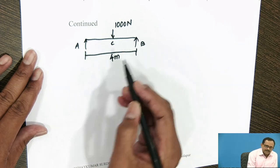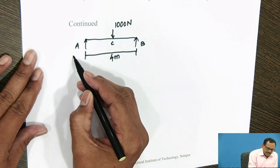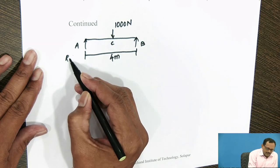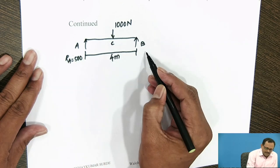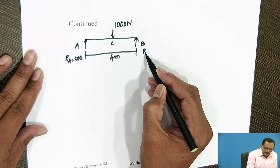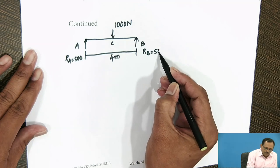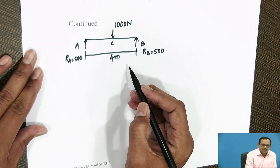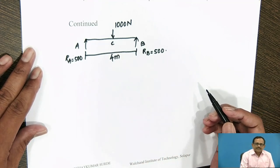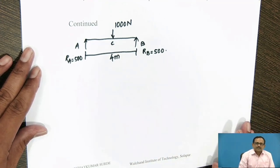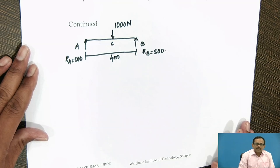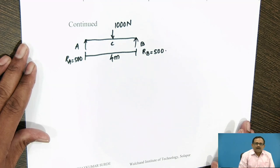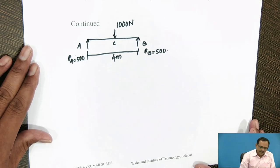As we have calculated the reaction previously, the reaction at A is 500 N and reaction at B is also 500 N. Now, the bending moment at the section is considered to be positive when the moment due to the forces and reactions tends to bend the beam to a curvature having concavity at the top.